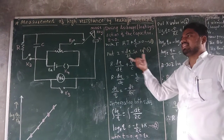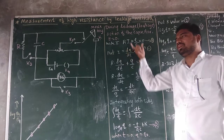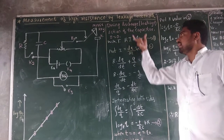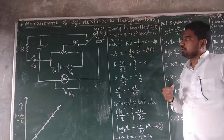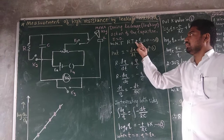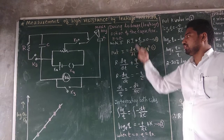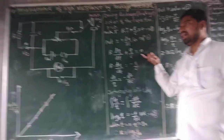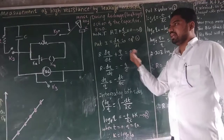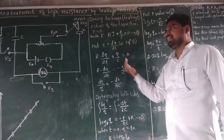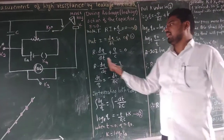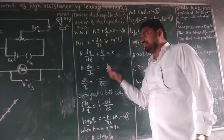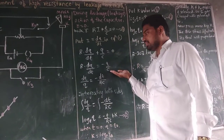By the definition of current, i equals dq by dt. Substituting this into equation number 1, we get R times dq/dt plus q/C equals 0. Taking q/C to the right-hand side, we get R times dq/dt equals minus q by C.